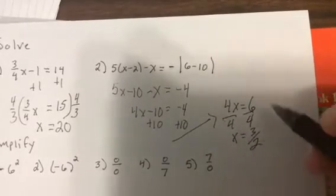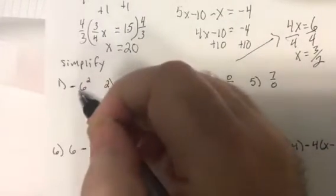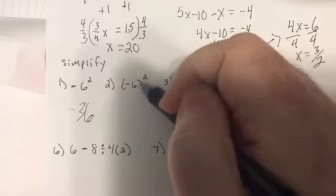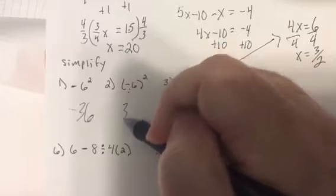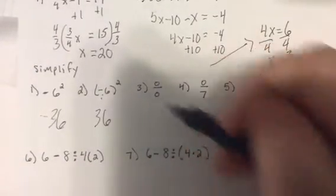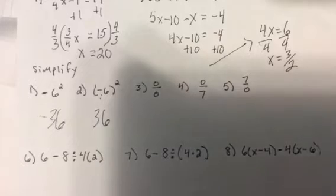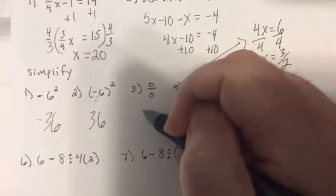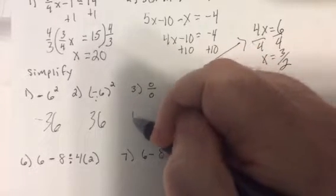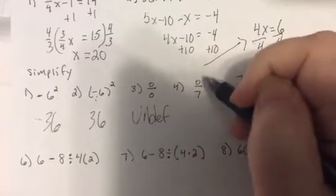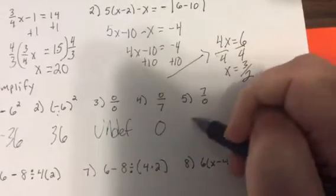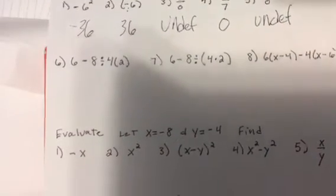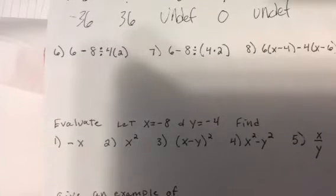Now let's do these. The opposite of 6 squared, no parentheses, so that'd be negative 36. With parenthesis that means it's negative 6 times negative 6, which is 36. This - zero on the bottom - it's undefined. That is true all the time, so it's undefined.